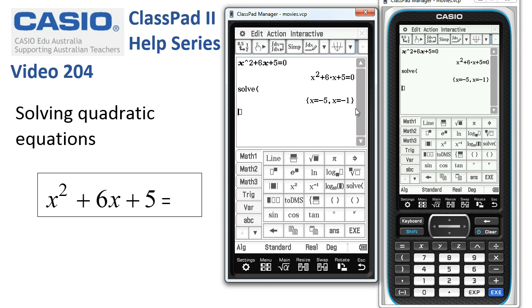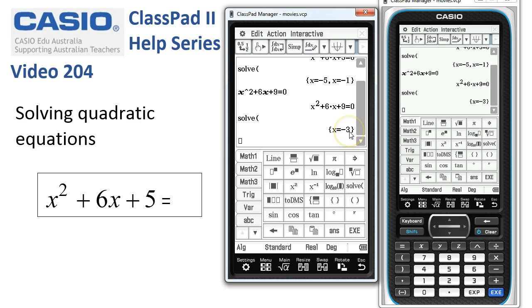Notice there may be one, two, or possibly no solutions to our equation. For example, let's just take the equation down, modify it so that we've got plus 9 at the end here. Tap Execute and ask Classpad to solve this one. Tap Execute. There is just one solution.